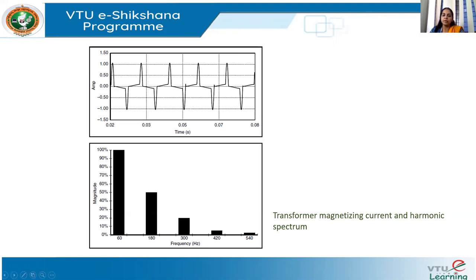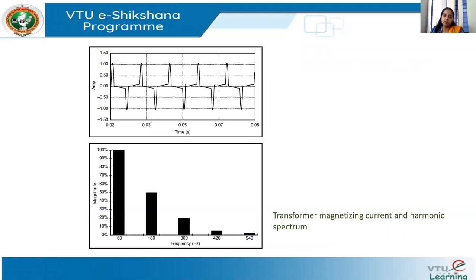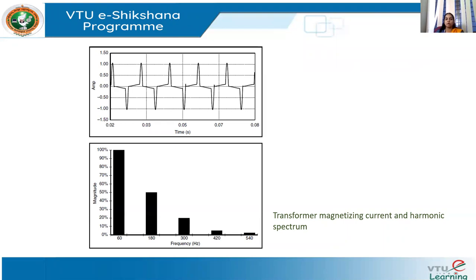The waveform shown is for a single-phase star-connected three-phase transformer. The current contains large zero-sequence harmonics. The third harmonics belong to the zero-sequence category, and if you have a grounded star connection, these currents get added and flow to the neutral, causing slight overloading of the neutral conductor.